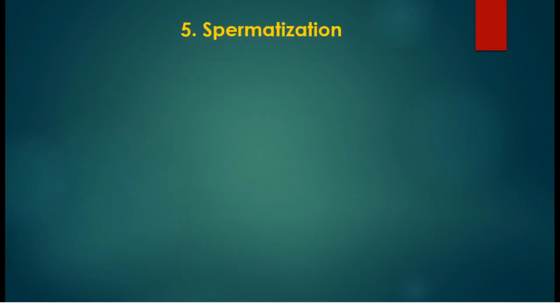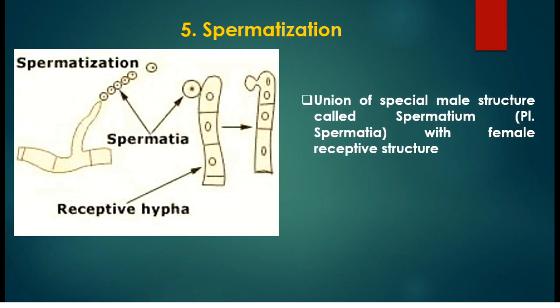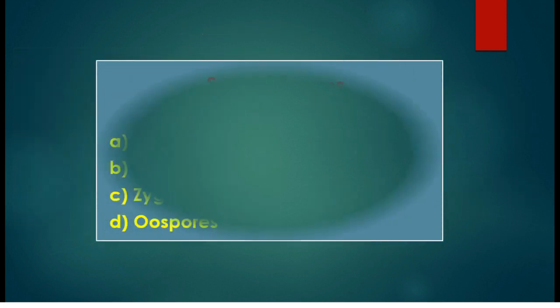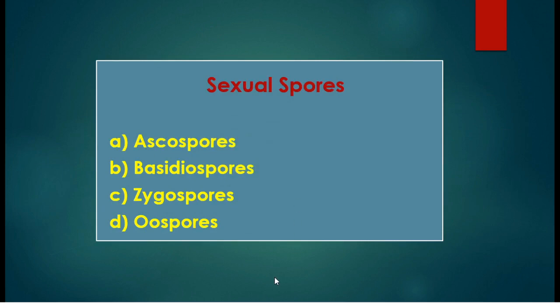The last sexual reproduction method is spermatization. In spermatization there is a special male structure called spermatium. The spermatium comes in contact with the female receptive structure. During plasmogamy there is no direct fusion; instead the spermatium empties its contents into the receptive female hyphae, and by these different sexual methods different sexual spores are produced.